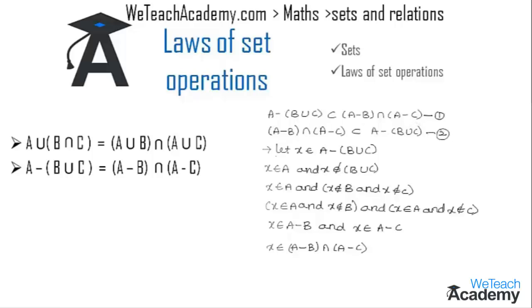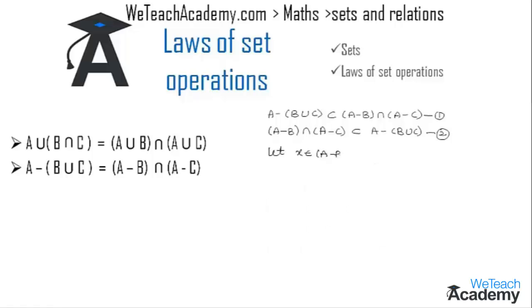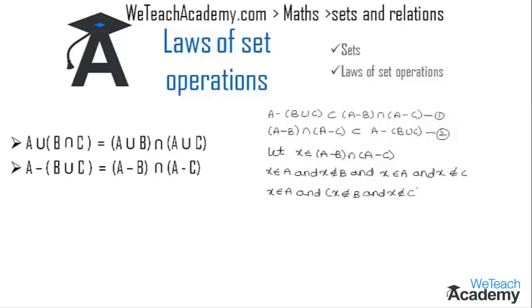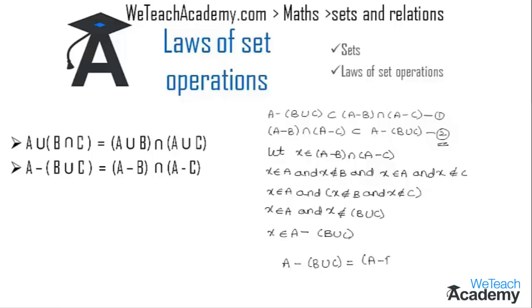Now let us prove the second condition. Let x belong to (A minus B) intersection (A minus C). This means x belongs to A and x does not belong to B, and x belongs to A and x does not belong to C. So x belongs to A and x does not belong to B and x does not belong to C. Therefore x belongs to A and x does not belong to B union C, which means x belongs to A minus (B union C). So (A minus B) intersection (A minus C) is a subset of A minus (B union C), and hence A minus (B union C) equals (A minus B) intersection (A minus C).